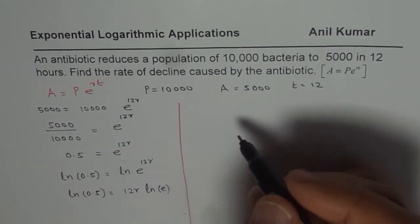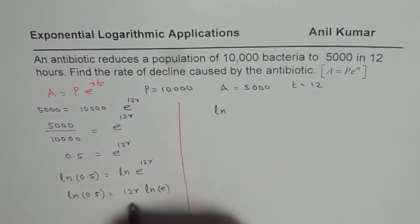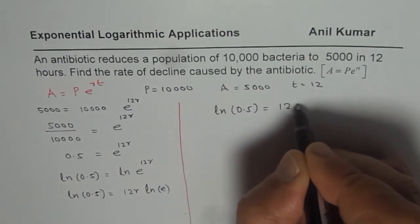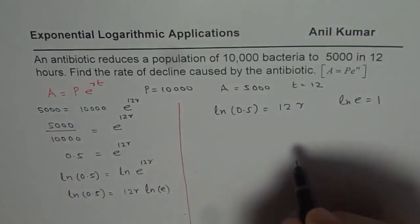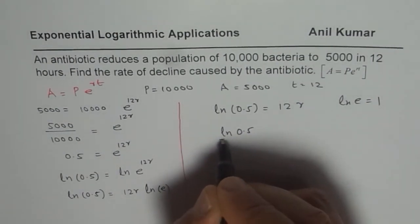Let us solve it further. We can write this as ln 0.5 equals 12 times R, since ln e equals 1. Now R equals ln 0.5 divided by 12. Let us use the calculator to find R.